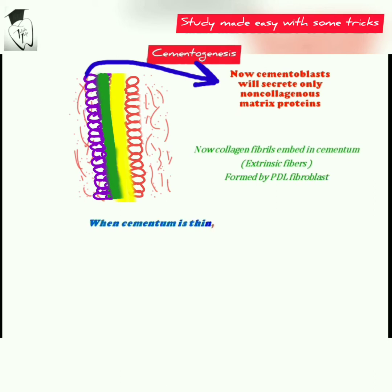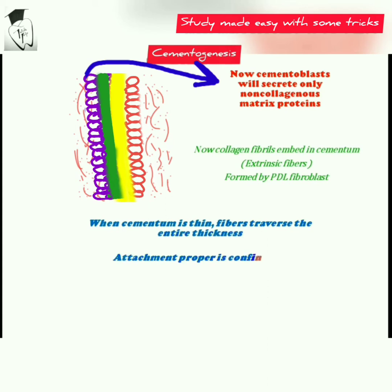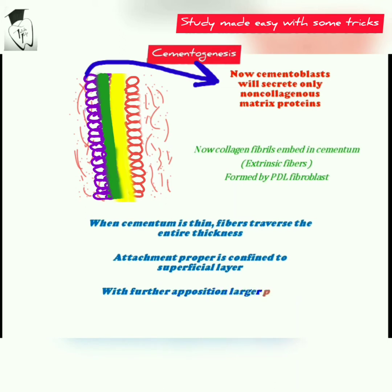When cementum is thin, the fibers traverse the entire thickness. As more cementum is deposited, the attachment is confined to the superficial layer, and with further apposition, a larger part of the fibers is incorporated into the cementum.